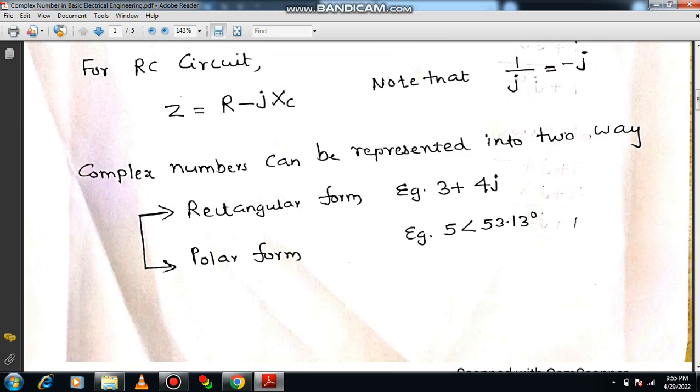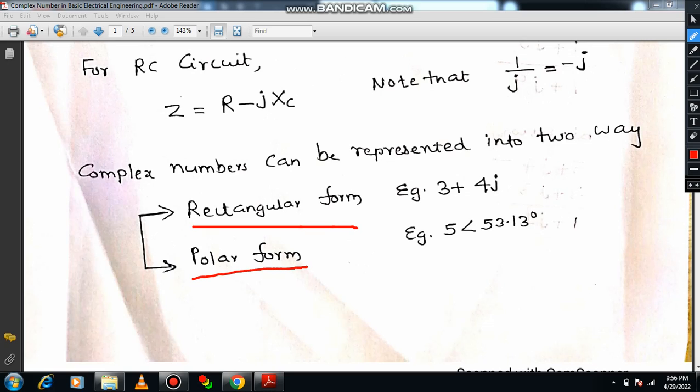We can perform the complex number into different operations. Whenever you are solving numerical examples, these problems are required. These analyses are badly required. Complex number can be represented into two manners: one is rectangular form, another one is called the polar form. Rectangular form is usually represented by A plus IB. If I talk about polar form, we write it as R angle theta. R is magnitude or modulus value and theta is the angle.